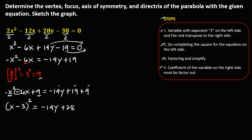Factor out negative 14 from the right side: (x minus 3) squared equals negative 14 times (y plus 28 divided by negative 14). Since positive divided by negative is negative, 28 divided by 14 is 2, so we get (x minus 3) squared equals negative 14(y minus 2). This is now the standard equation of the parabola.